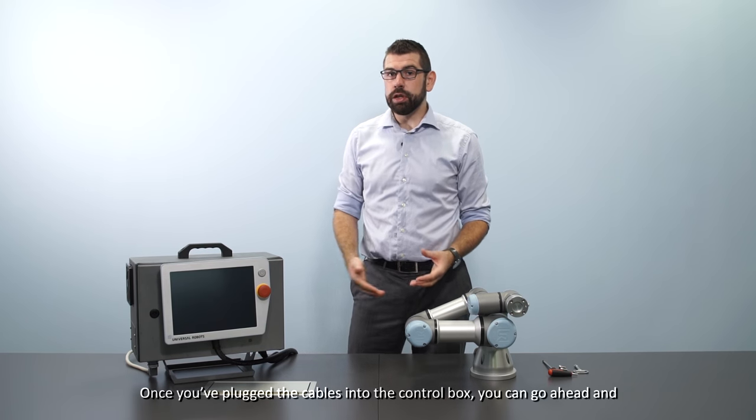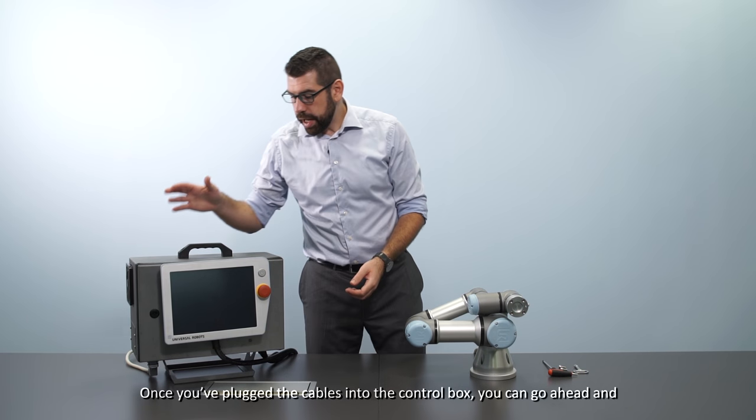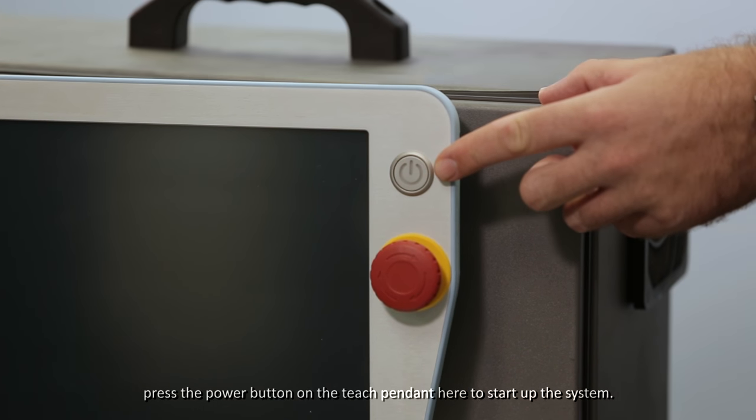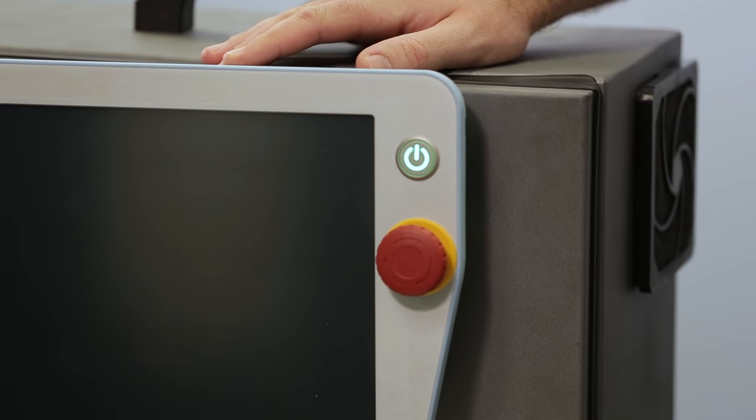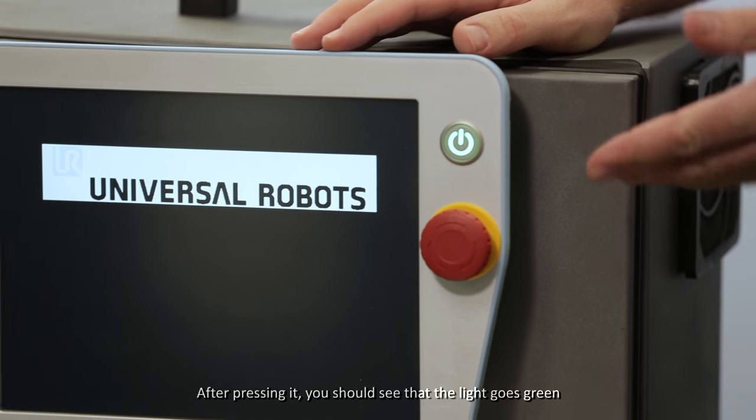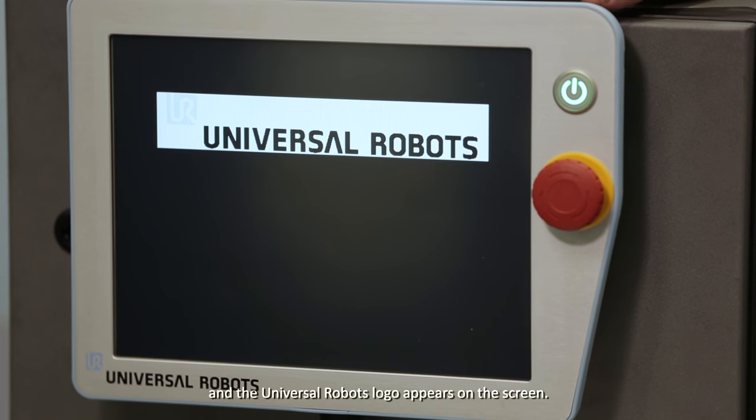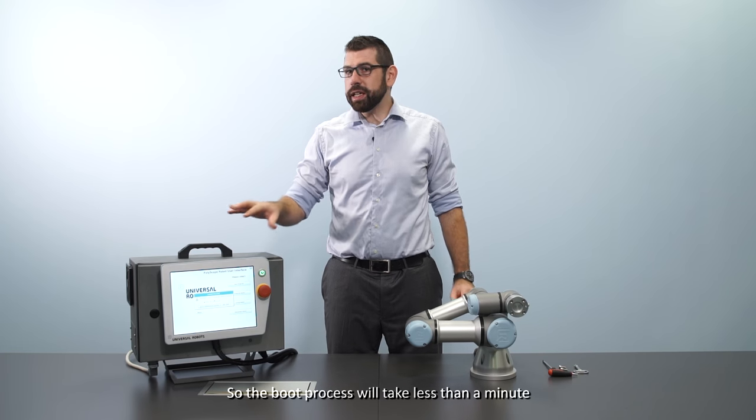Once you've plugged the cables into the control box, we can go ahead and press the power button on the teach pendant here to start up the system. After pressing it, you should see that the light goes green and the Universal Robots logo appears on the screen. So the boot process will take less than a minute.